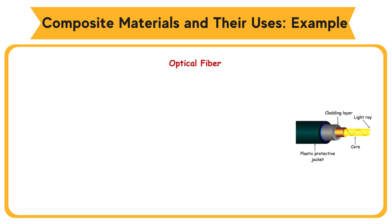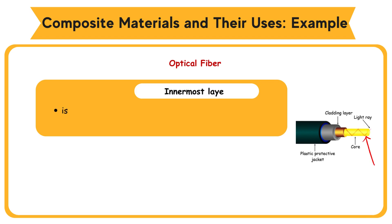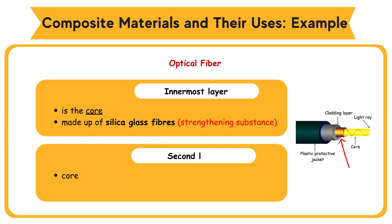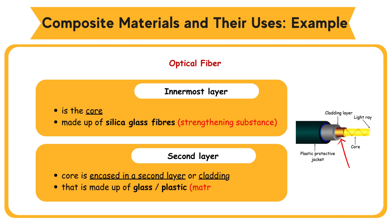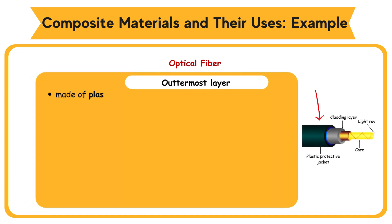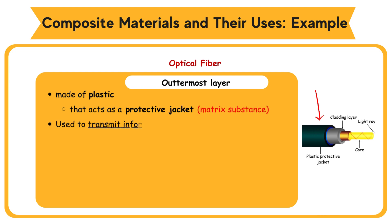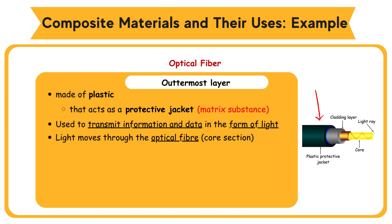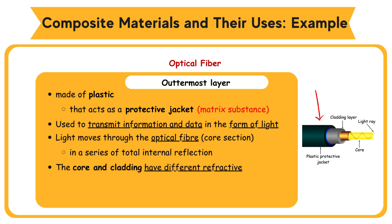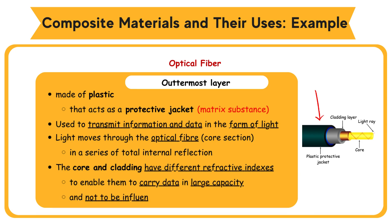Optical fiber consists of three layers. The innermost layer is the core, made up of silica glass fibers (strengthening substance). The core is encased in a second layer, or cladding, made up of glass or plastic (matrix substance). The outermost layer is made of plastic that acts as a protective jacket (matrix substance). It is used to transmit information and data in the form of light. Light moves through the optical fiber core section in a series of total internal reflection. The core and cladding have different refractive indexes to enable them to carry data in large capacity and not to be influenced by electromagnetic disturbance.